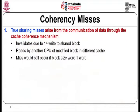We looked at the cache coherency problem in the previous module. Cache coherency refers to caches supporting migration and replication — you can migrate data from main memory into the cache, and the same data can be replicated in multiple caches. In a multiprocessor scenario, multiple cache controllers can hold the same cache block.